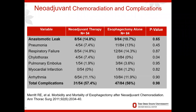Neoadjuvant chemoradiation has been shown not to increase postoperative complications. In a study I published in the Annals of Thoracic Surgery in 2011, I compared patients who had neoadjuvant chemotherapy and radiation followed by esophagectomy to patients who had esophagectomy alone. There was no significant difference in the frequency of complications, including pneumonia, anastomotic leak, and total complications.